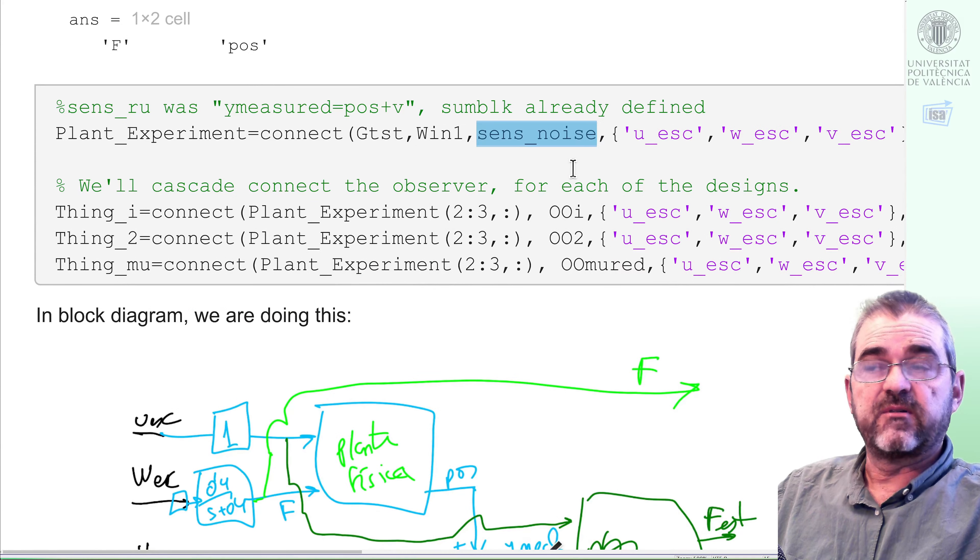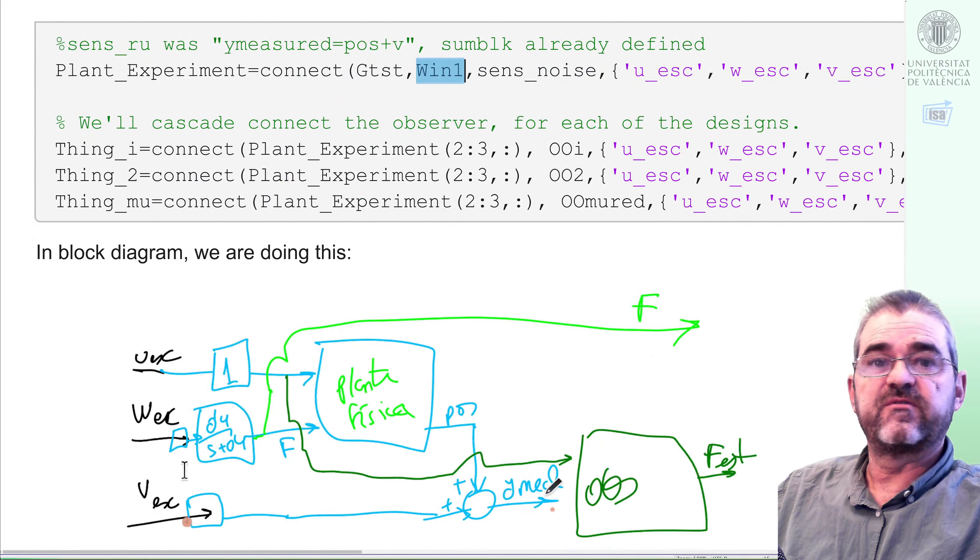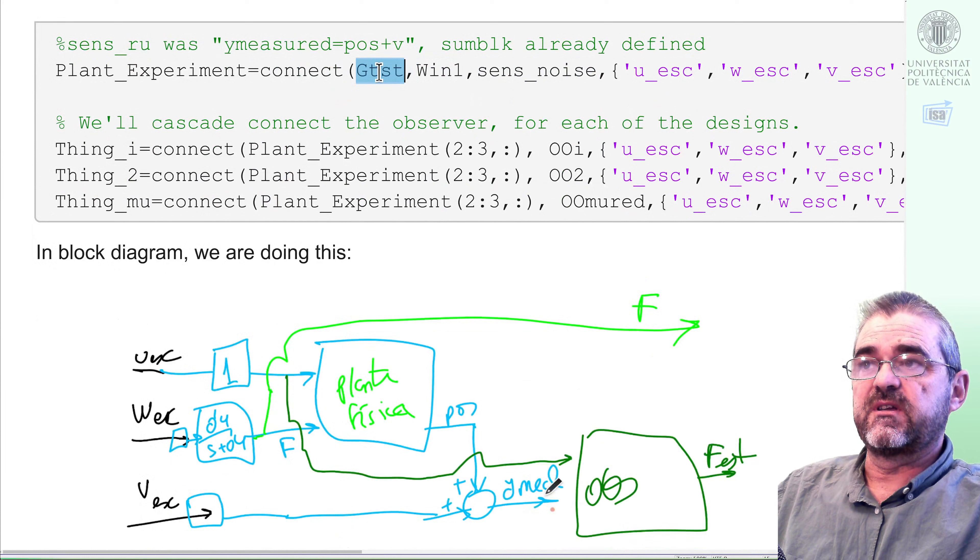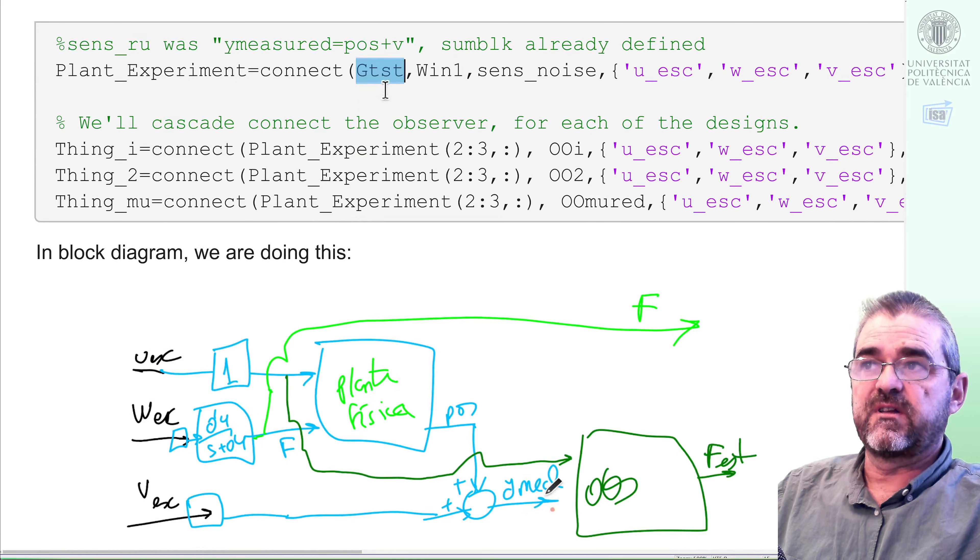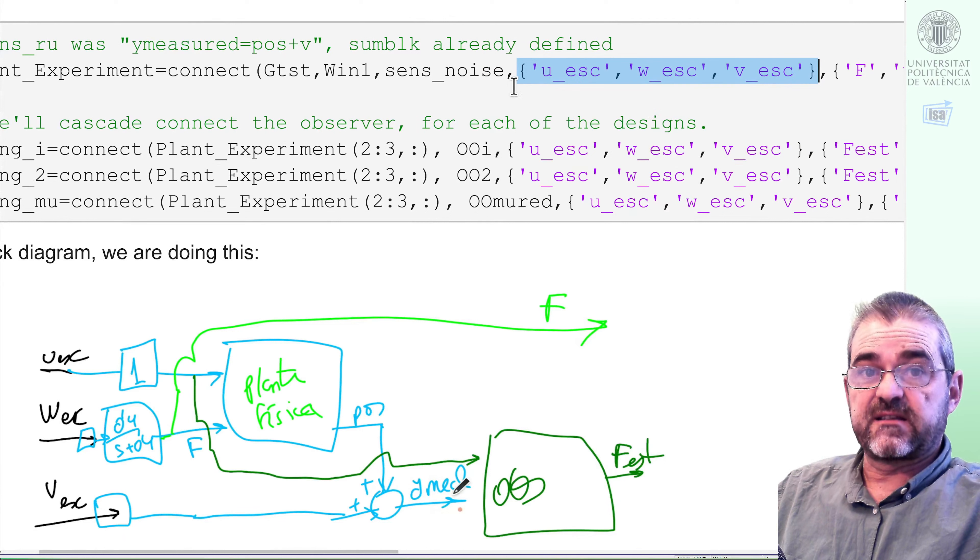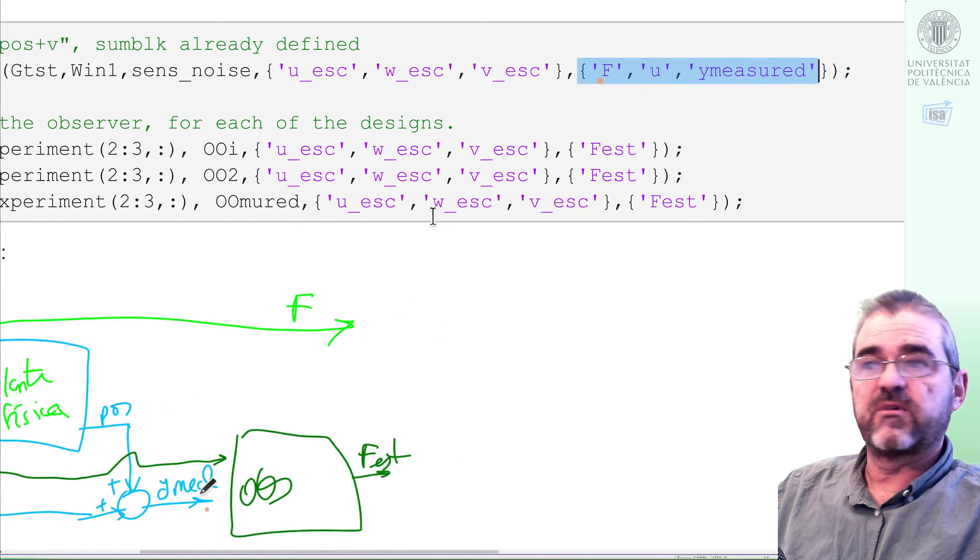So how do we do it? We will do it by name, connecting the sensor noise formation block, the constant input weights, and this gtst, which was the uncertain plant with this low-pass stuff. These three elements were built in previous videos, and the thing is that when connecting those two things, we went to MATLAB to extract a dynamical system with these three scaled inputs whose worst case amplitude will be 1, and we want as outputs, as we saw in the block diagram, the force, the known input u, and the measurement.